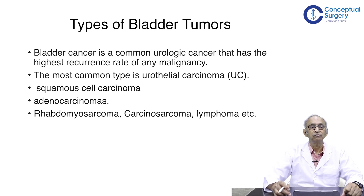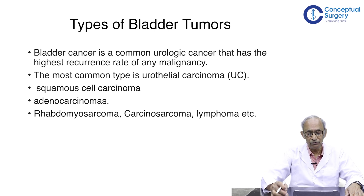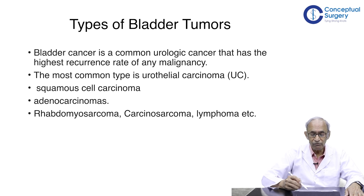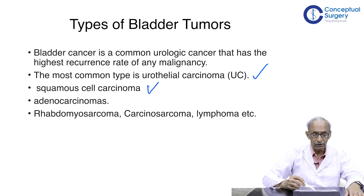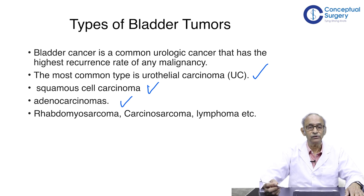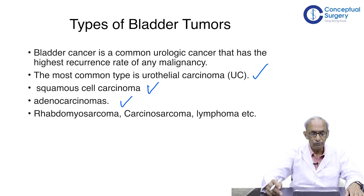What are the different types of bladder tumor? It is a common urological cancer with the highest recurrence rate of any malignancy. If you treat a case today, it is quite likely that it recurs several times during the first year after treatment. The most common variety is urothelial carcinoma. The next one is squamous cell carcinoma, and a third is adenocarcinoma — for example, the one arising from the urachus is a typical case of adenocarcinoma. There are also rhabdomyosarcomas, carcinosarcomas, lymphomas, etc.